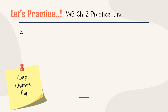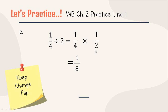Look at C: one per four divided by two. Keep — one per four. Change the division symbol to multiplication. Flip: that two becomes one per two. The answer: numerator one times one equals one, denominator four times two equals eight. So the answer is one per eight.